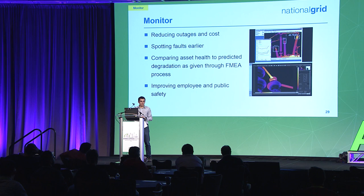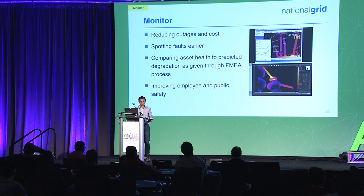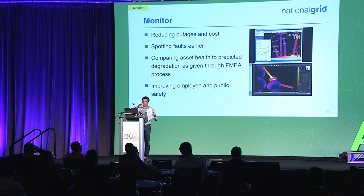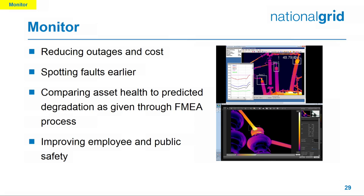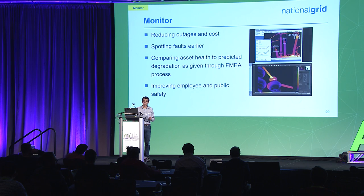The final part I'm going to talk about is how we monitor our assets. Why do we monitor them? It reduces outage costs and we spot faults. We've got our risk framework, we've got our plan, and now we've got to take care of those assets and operate them. We can compare the asset health to the predicted degradation given by the failure curves calibrated by the engineers — see where they are, whether they are where they should be. And it all boils down to improving safety and protecting public safety.